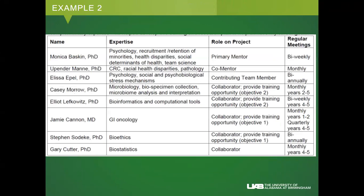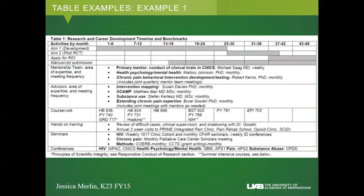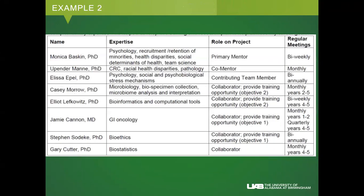Another thing to think about in a feed-forward fashion: if you're in basic science and your next step would be a basic science R grant, that's one set of metrics where you have to build credential. But if your K is in AHRQ or PCORI, think about what your next R-type grant might be and what you might have to build to make that successful.